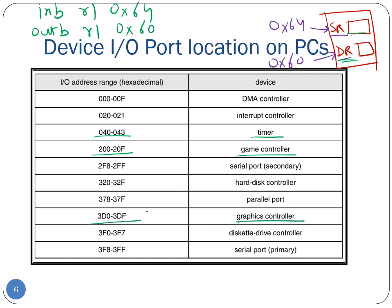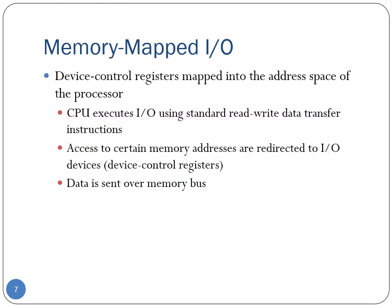Another possible way of communicating with I/O devices is memory-mapped I/O. If the I/O device supports memory-mapped I/O, then the device control registers of the I/O device are mapped into the address space of the CPU. Once this is done, the CPU only needs to read and write into the corresponding memory addresses, and these reads and writes are automatically translated into reads and writes into the device registers.